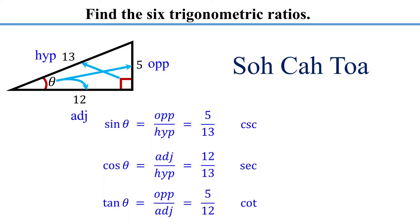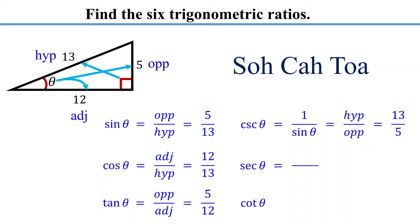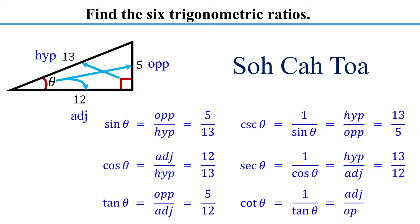The other three ratios are simply the reciprocals. Cosecant is the reciprocal of sine, so it is 13/5. Secant is the reciprocal of cosine, so it is 13/12. Cotangent is the reciprocal of tangent, so it is 12/5.